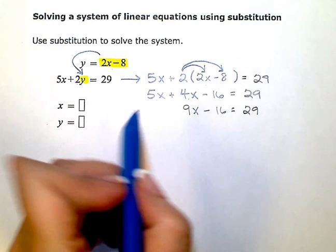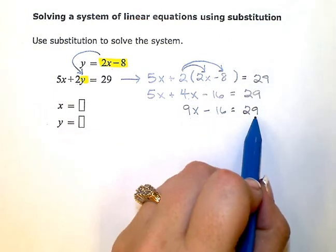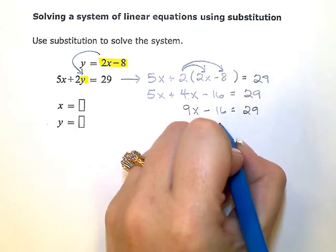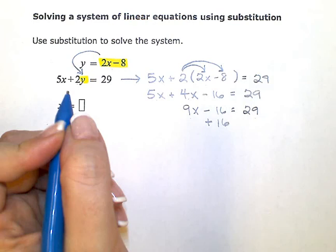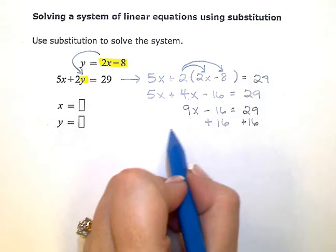Then I only have one x term, but I have constant terms on both sides of my equals. So I need to zero out this one or eliminate it by adding 16, the inverse operation, and then balance my equation by doing the same thing on the other side.